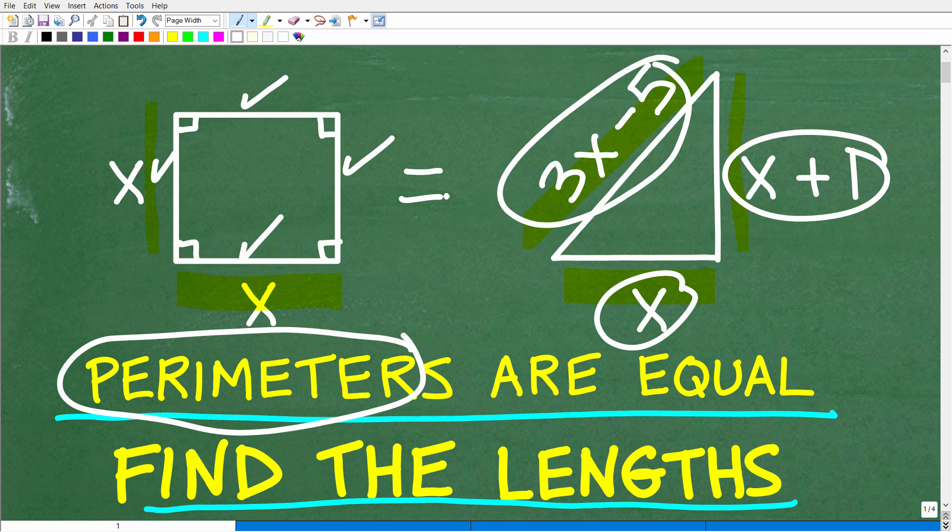So we're being told that the perimeters of these two figures are equal. That is a big clue. Now of course, you need to know a little bit of algebra to solve for x. And then once you have x, you can actually determine the correct dimensions of the square and the triangle.